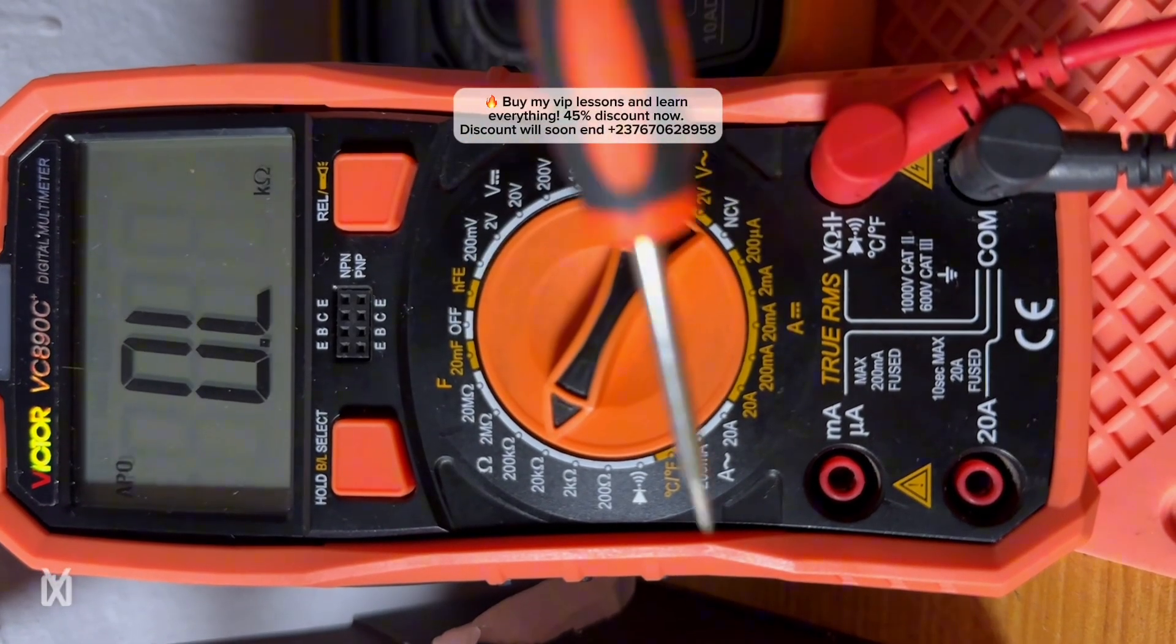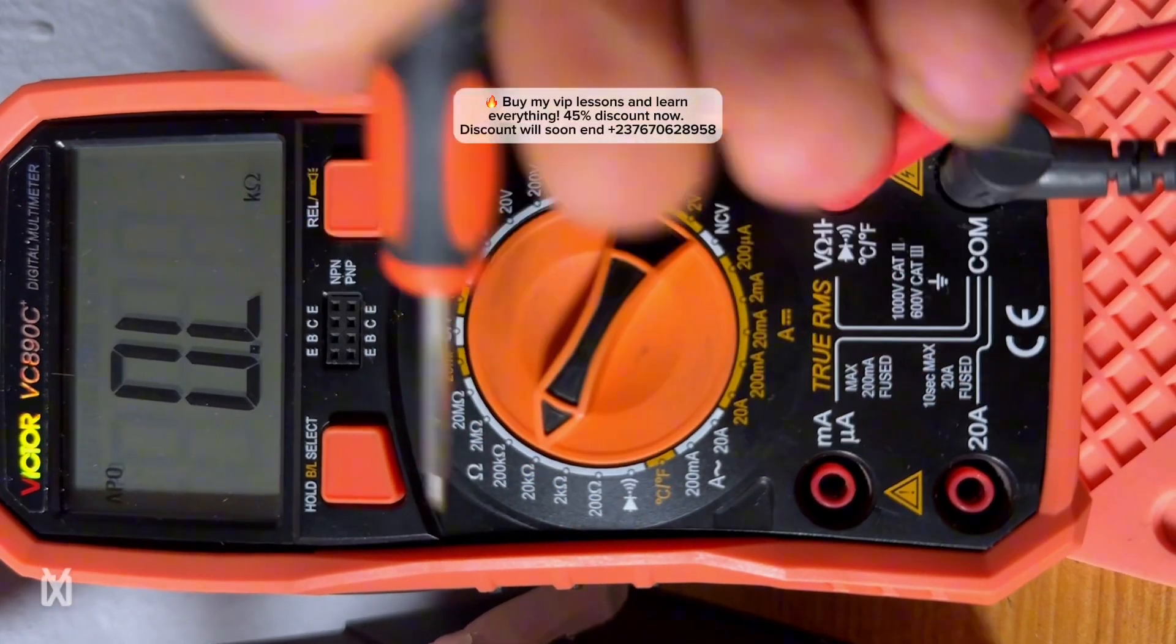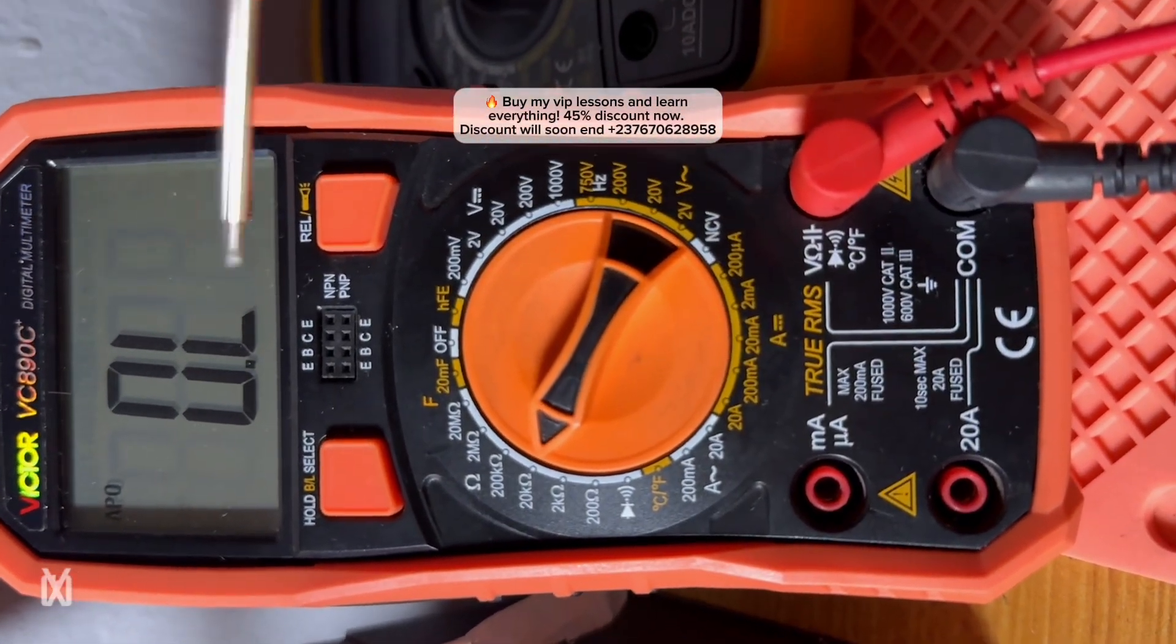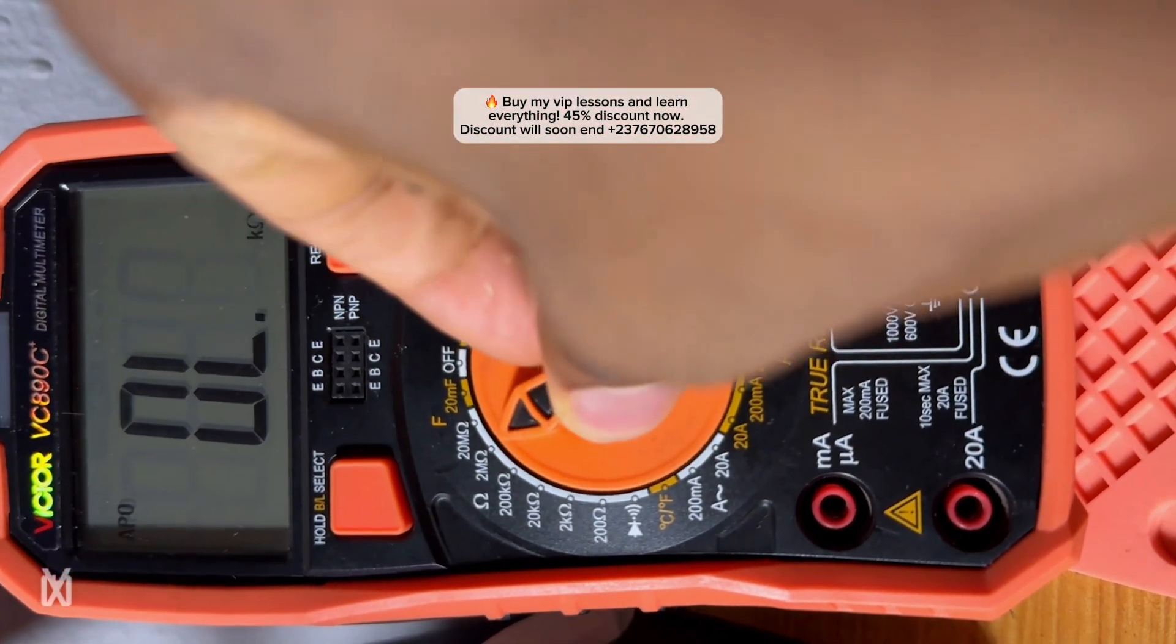The reason why I'm showing you this option is because I have noticed a lot of technicians go on removing a lot of components, resistors in a mobile PCB, saying that they are not reading. And that's because they are not setting their multimeter in the correct range to test the resistor.